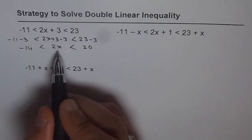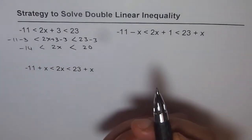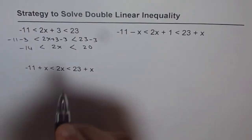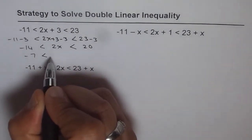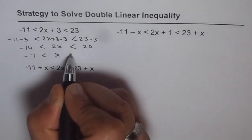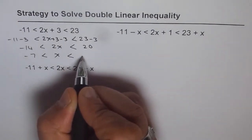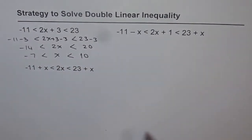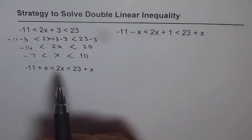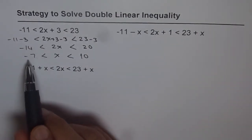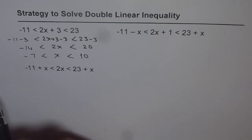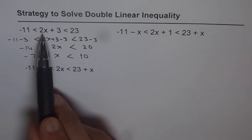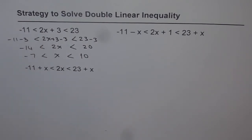To find x, divide all parts by 2. You get minus 7 is less than x is less than 10. So your solution is that x is greater than minus 7 and less than 10. That is how you can solve a double linear inequality in which x is right in the center and it's only at one place.